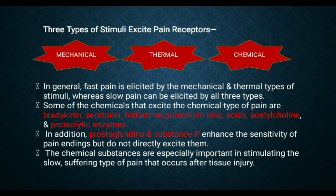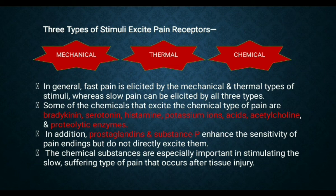Chemical stimuli that cause pain include bradykinin, serotonin, histamine, potassium ions, acids, acetylcholine, and proteolytic enzymes. Prostaglandins and substance P enhance the sensitivity of the pain endings but do not directly excite them — meaning they sensitize the pain receptors rather than directly activating them.